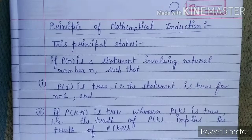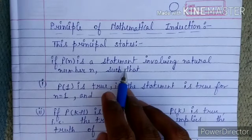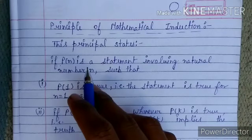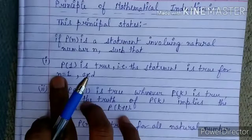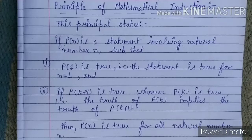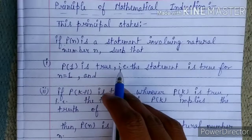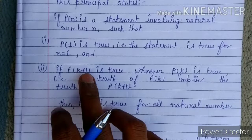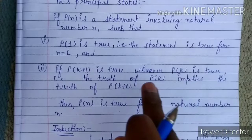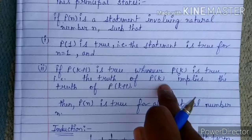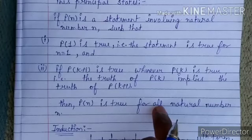Formally, if P(n) is a statement involving natural numbers, the Principle of Mathematical Induction states: first, P(1) is true — i.e., the statement is true for n = 1; second, if P(k) is true then P(k+1) is also true — the truth of P(k) implies the truth of P(k+1) — then P(n) is true for all natural numbers.